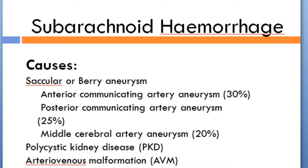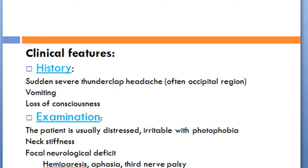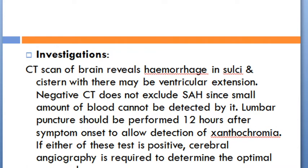Causes of subarachnoid hemorrhage include saccular or berry aneurysms: anterior communicating artery aneurysm (30%), posterior communicating artery aneurysm (25%), middle cerebral artery aneurysm (20%), polycystic kidney disease, and arteriovenous malformation. Clinical features include sudden thunderclap headache, often occipital, vomiting, and loss of consciousness. On examination, the patient is usually distressed and irritable with photophobia, neck stiffness, and focal neurological deficit such as hemiparesis, aphasia, and third nerve palsy. Fundoscopy may reveal subhyaloid hemorrhage.